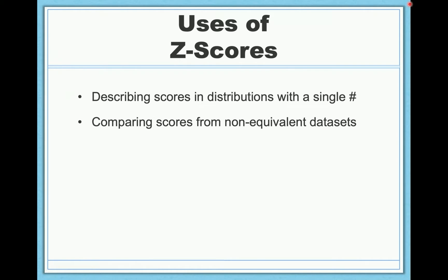Z-scores are also great for comparing scores from non-equivalent data sets. This is what we did on quiz 1 and quiz 2 — those two data sets were very different from one another. Yet if I told you I scored a z-score of 3 on quiz 1 and negative 3 on quiz 2, you automatically have a good idea of how I did relative to everyone else on those two quizzes.